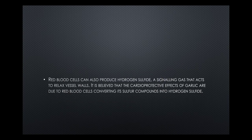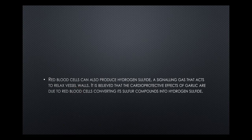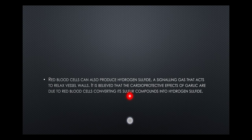Red blood cells can also produce hydrogen sulfide — a signaling gas that acts to relax blood vessels. It is believed that the cardioprotective effects of garlic are due to red blood cells converting its sulfur compounds into hydrogen sulfide, thereby dilating blood vessels for better oxygen supply and nourishment.